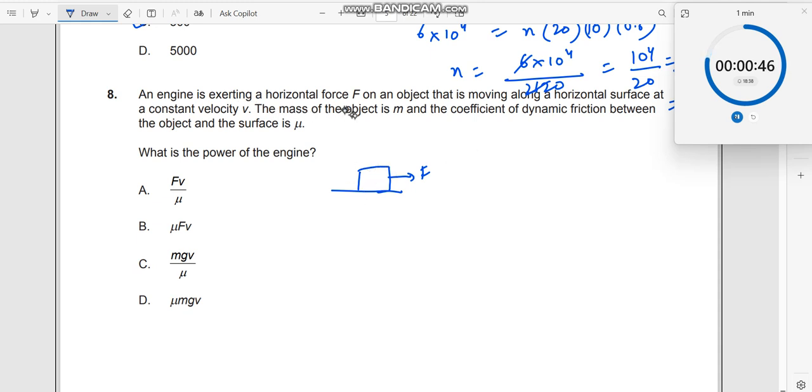The mass of the object is M. The coefficient of dynamic friction between the surface and the object is μ. So if it is moving, definitely you have a frictional force like this.